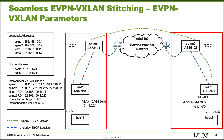Here is our topology and there are a few devices to talk about. There is Spine1, Leaf1, and Host1 — those devices are part of Datacenter1 or DC1. Spine1 and Leaf1 are QFX devices. Spine2, Leaf3, and Host2 are part of DC2 or Datacenter2, and Spine2 and Leaf3 are also QFX devices. The whole point of this learning byte is to configure seamless EVPN VXLAN stitching so that Host1 and Host2 can communicate with each other.